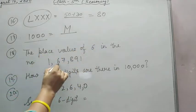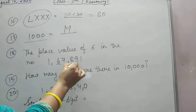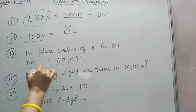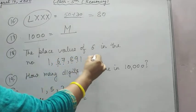Question 18: The place value of 6 in the number 1,67,891. Six's place value is in the tens thousands position, so the place value of 6 is 60,000.